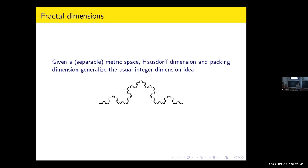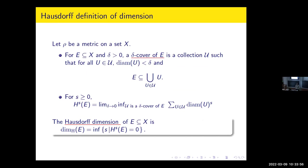We all know that Hausdorff dimension is a way of extending the natural intuition of geometric integral dimensions. The concept of Hausdorff dimension is based on the concept of Hausdorff measure. The Hausdorff dimension is like the flipping point — the S at which Hausdorff measure goes from infinity to zero.